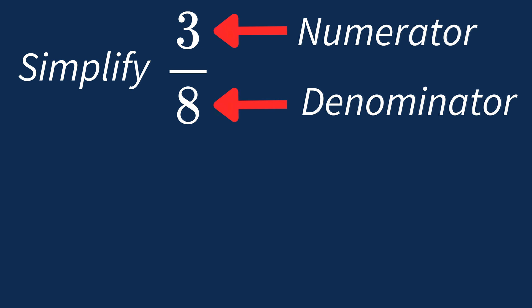A common factor is a number that divides evenly into both. Let's take a look at the factors for each number in our fraction.